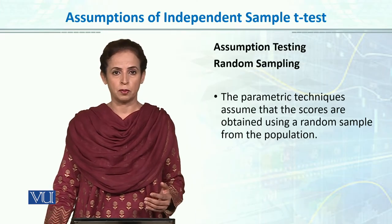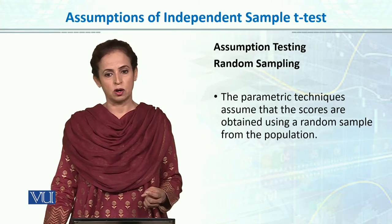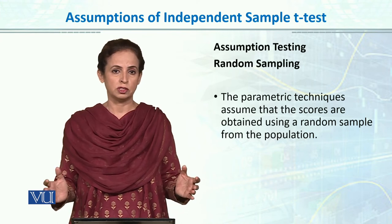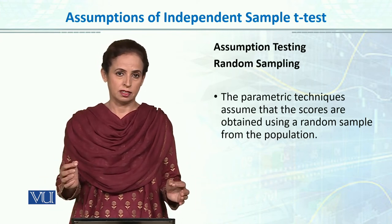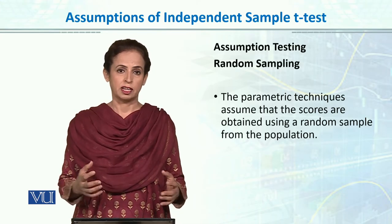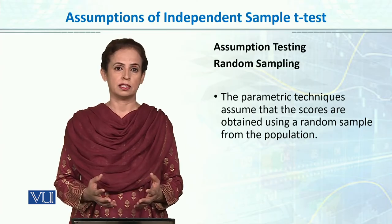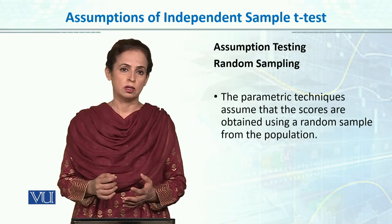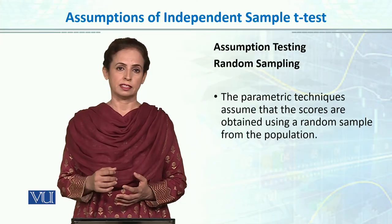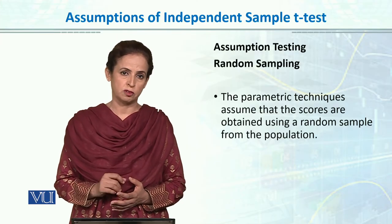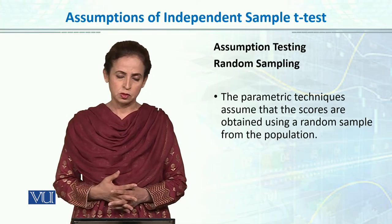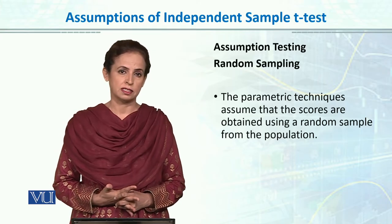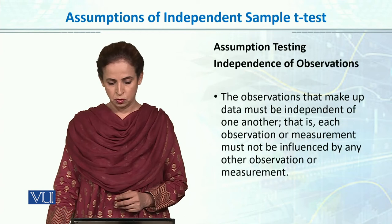The second assumption is random sampling. For parametric testing, when you draw a sample from the population, it should be randomly drawn. Random sampling is difficult because you must know the total population and then randomly select samples from it — for example, using a chit method to select 5 people from a class of 30, where each person has an equal and known probability of being selected. In most student theses, t-tests are run without random sampling, but increasing sample size is used to justify it.